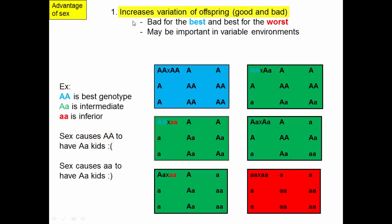The first advantage of sex is that it increases the variation of offspring, and this can be both good and bad. Consider a scenario where the capital A allele is the better allele and the lowercase a allele is the worse allele. AA homozygotes have the best genotype, aa homozygotes have the worst, and heterozygotes are intermediate. A capital A homozygote mating with another capital A homozygote produces all capital A offspring — that's good. But mating with a heterozygote means half the offspring are worse.